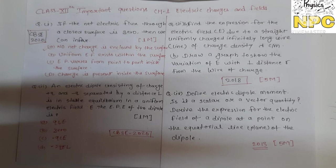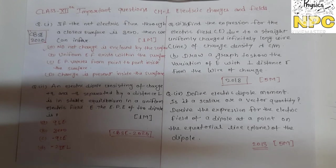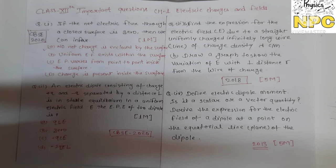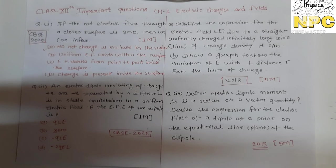Question number one: if the net electric flux through a closed surface is zero, then we can infer — first, no charge is enclosed by the surface; second, uniform electric field exists within the surface; third, electric potential varies from point to point inside the surface; and fourth, charge is present inside the surface.